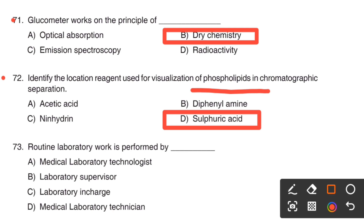Next one. Routine laboratory work is performed by dash. Option A, Medical laboratory technologist. Option B, Laboratory supervisor. Option C, Laboratory in-charge. Option D, Medical laboratory technician.